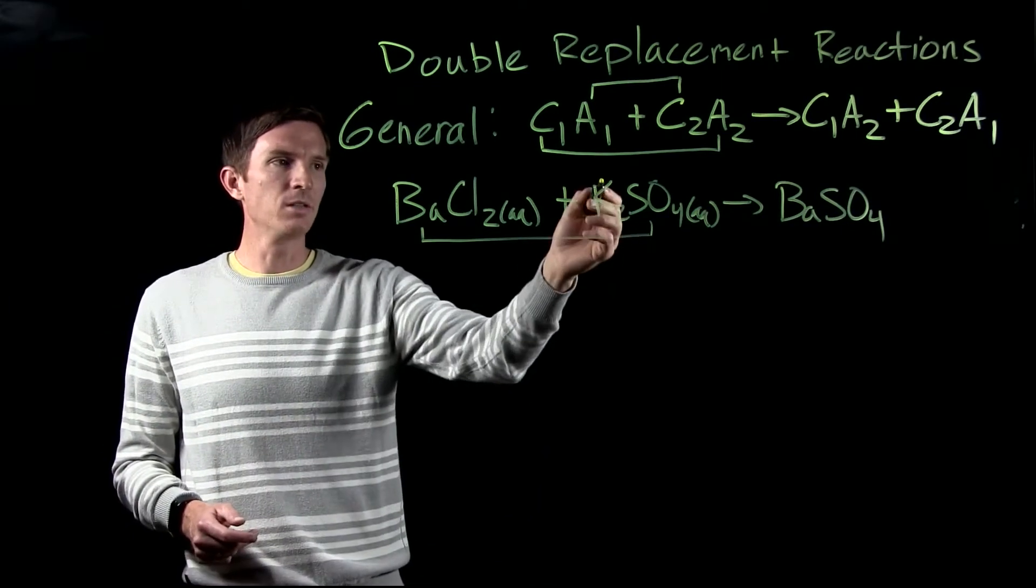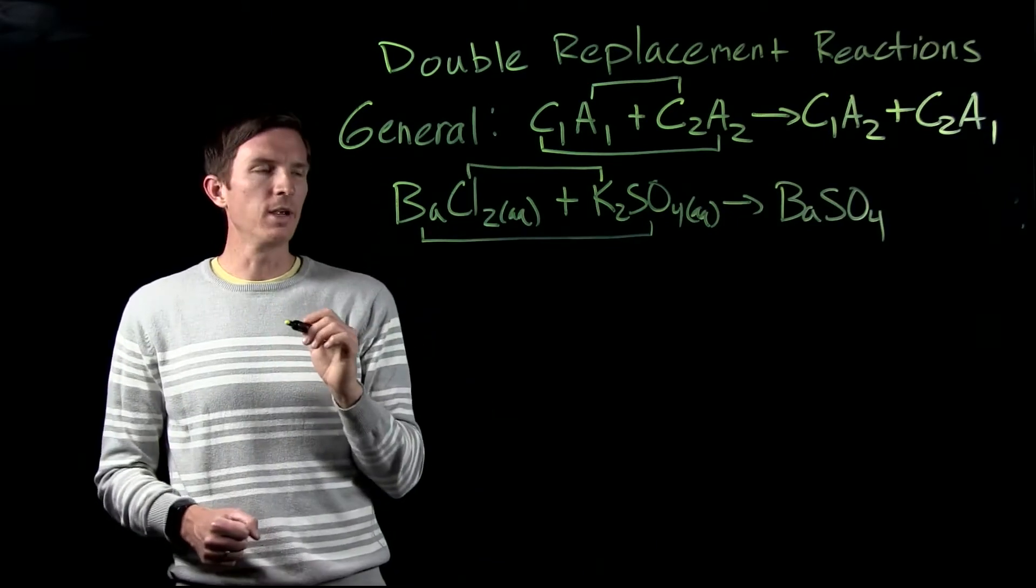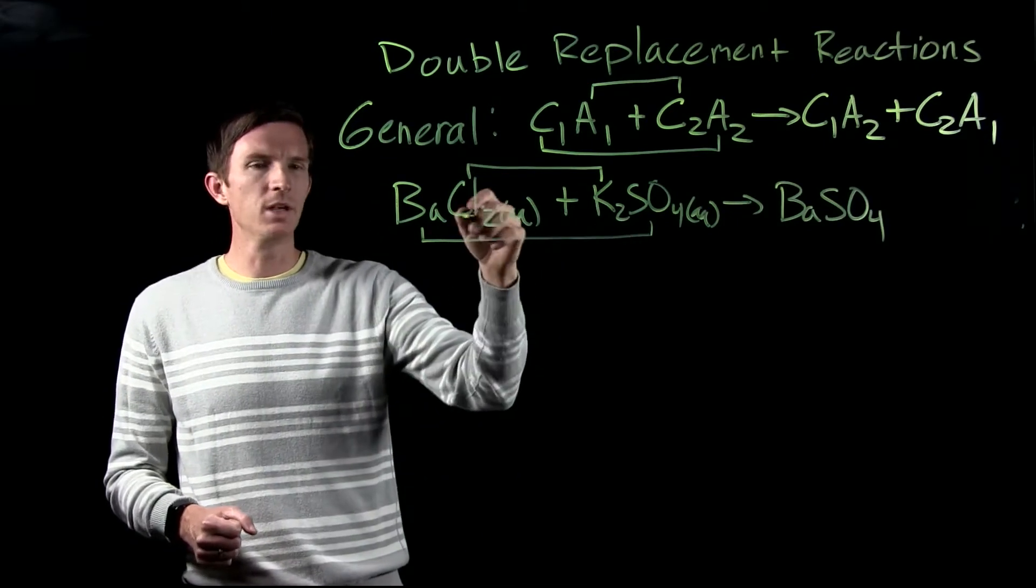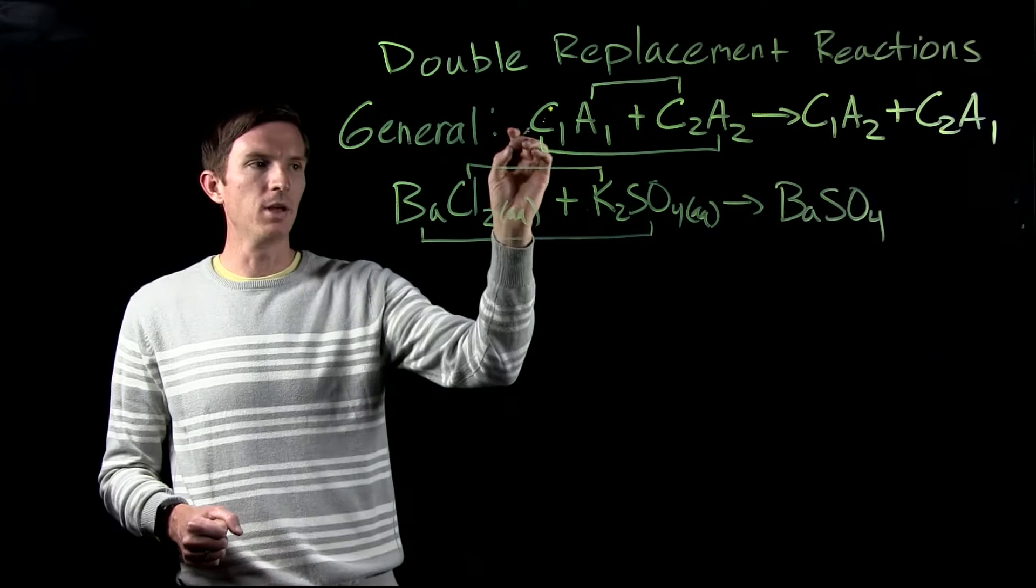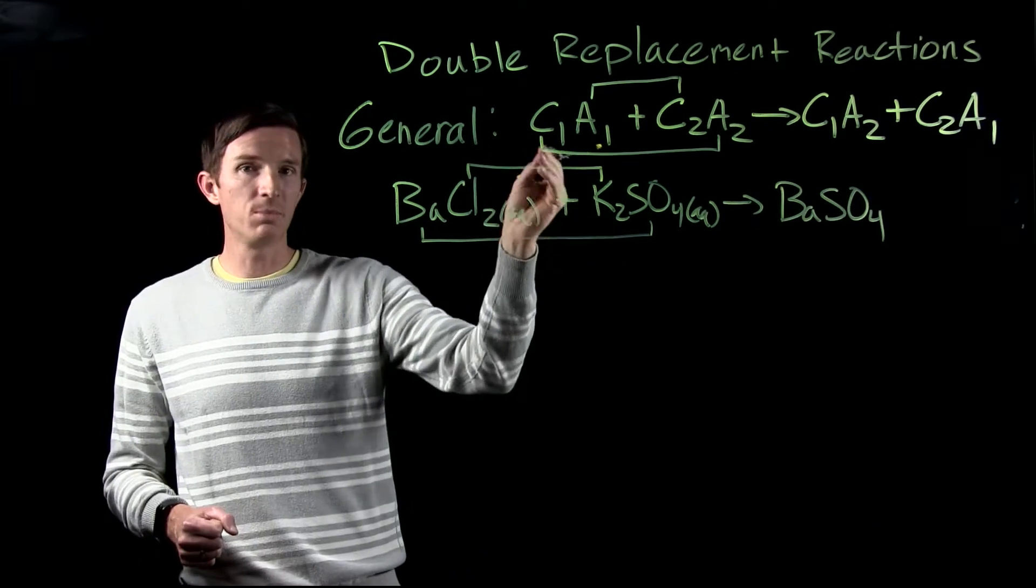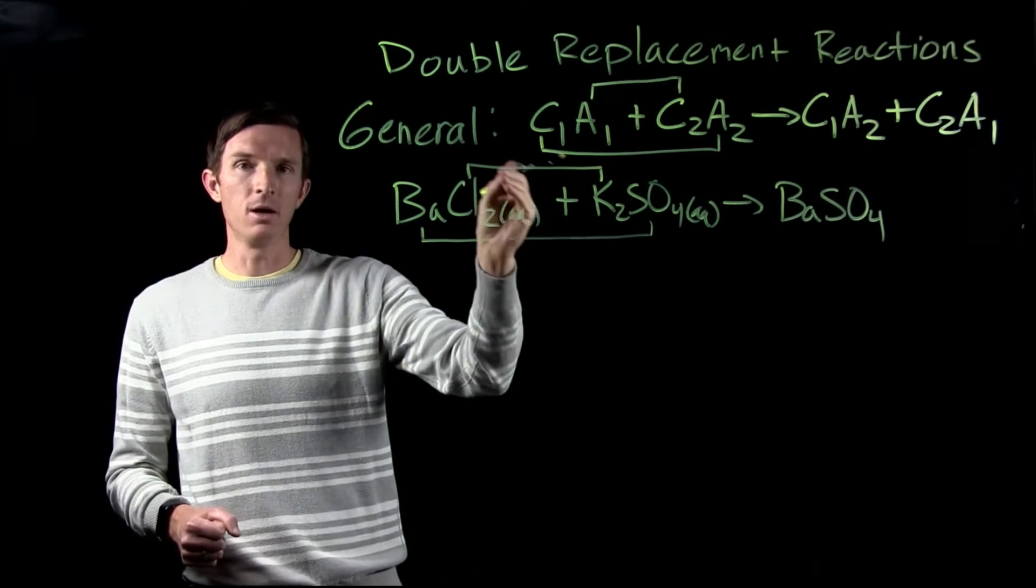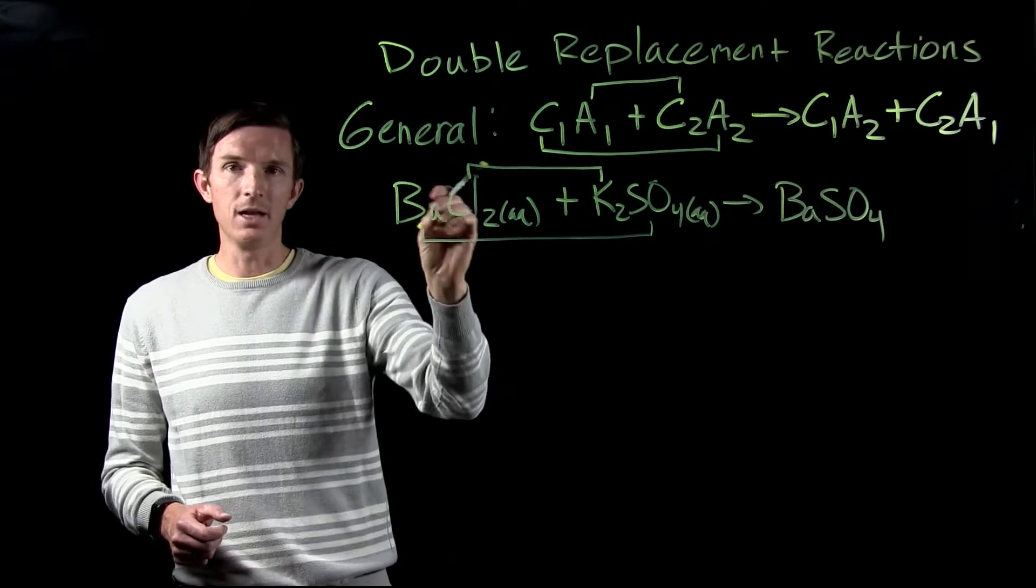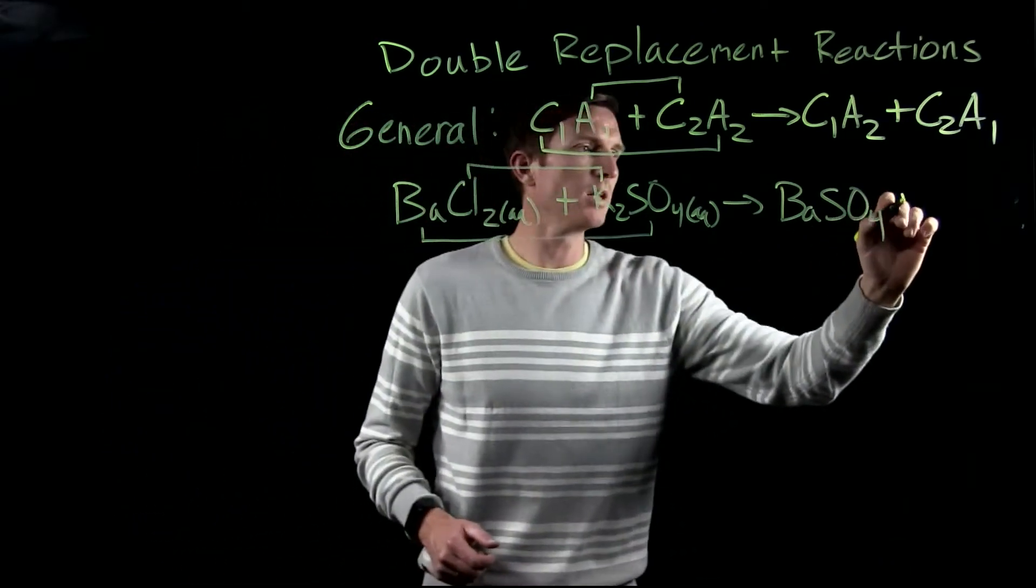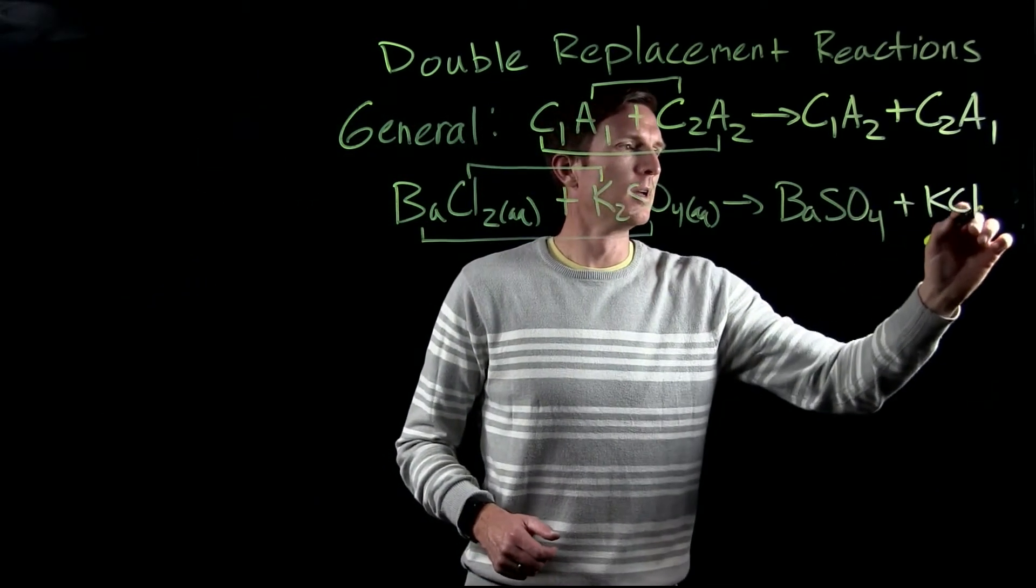So if I have potassium combined with chlorine, I wouldn't write it as K2Cl2. I don't keep the subscripts here. I say well it's potassium, K plus, combining with chlorine, chloride, Cl minus. And so that would give us KCl.